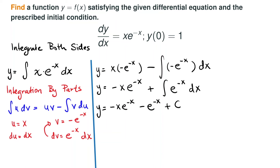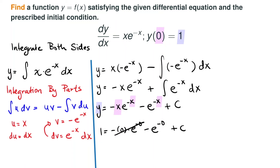Our next task is to use the initial condition to identify the constant of integration. We input x equals 0, and the equation should equal 1. So 1 equals negative 0 times e to the negative 0 minus e to the negative 0 plus C. Zero times anything finite is 0, and e to the 0 equals 1, so this becomes 1 equals negative 1 plus C, giving us C equals positive 2.